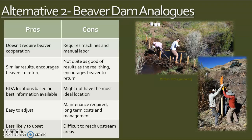Alternative two is using beaver dam analogs (BDAs), which as a pro doesn't require beaver. It comes with similar results and does encourage beavers to return in some cases, because you're essentially building better habitat and they come back on their own. BDA locations are also based on the best available information, so it could be a precisely chosen location, giving us more control for things like flooding or impacts to surrounding areas. It's a lot easier to adjust since it's man-made, and it's less likely to upset neighbors because it's seen as controllable, as opposed to beavers, which have a bad rep.